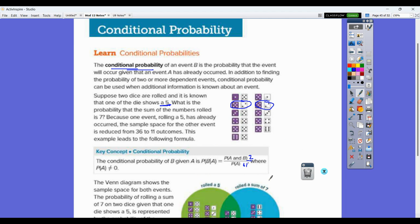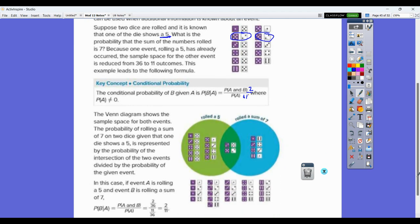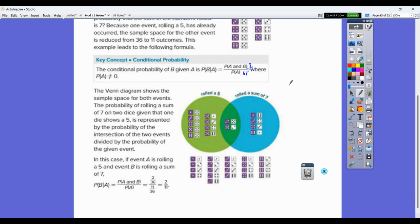The Venn diagram shows the sample space for both events. The probability of rolling a sum of 7 on two dice, given that one dice shows a 5, is represented by the probability of the intersection of the two events. So roll the sum of 7 would be all of these possibilities. Roll the 5 are all of these ones, and these are all of the other ones that are there. If event A is rolling a 5 and event B is rolling a sum of 7, then the probability of B given A is kind of like I showed you up there, and I just did it with the 2 and the 11 because the bottom number of 36 was the same each time.